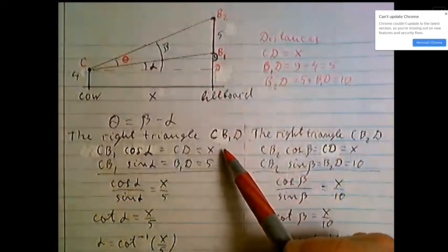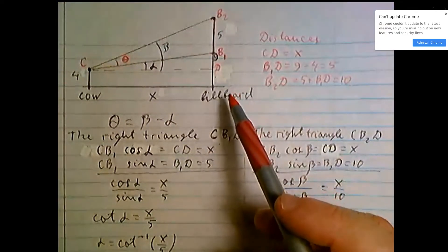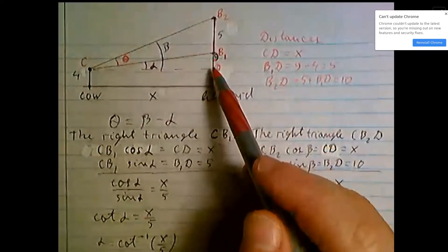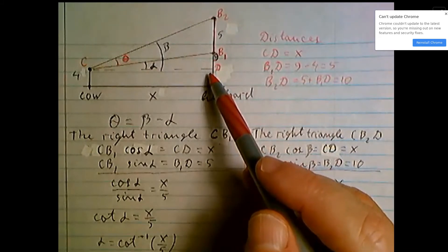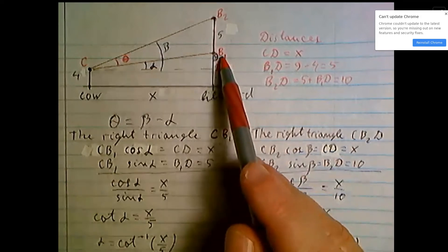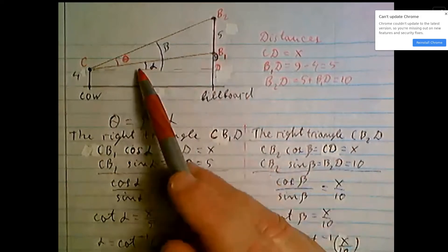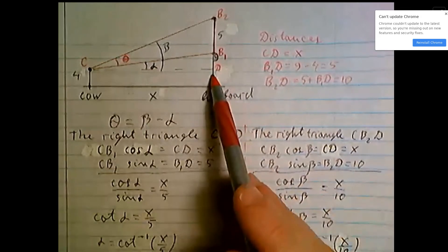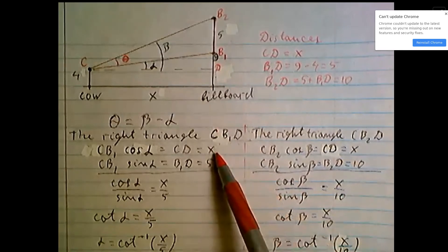Let's discuss right triangle CB1D. Right triangle, we know that hypotenuse CB1 times cosine alpha should equal leg CD, so it's x. Hypotenuse CB1 times sin alpha...